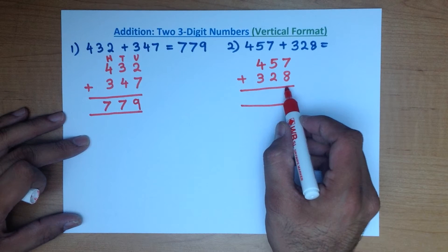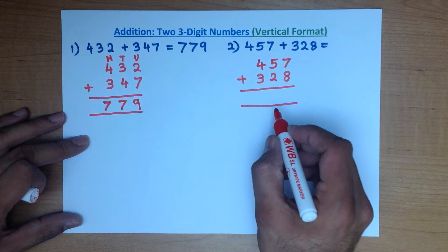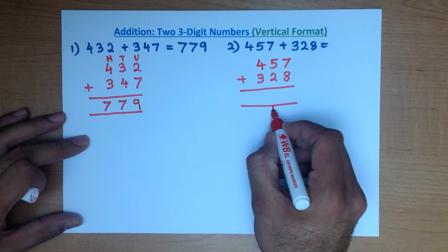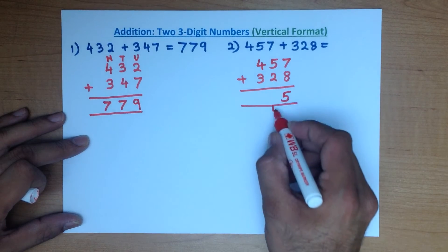What is 7 plus 8? That's right, 15. Do you remember how we write this down? We put 1 here and 5 here. This one becomes part of the tens column.